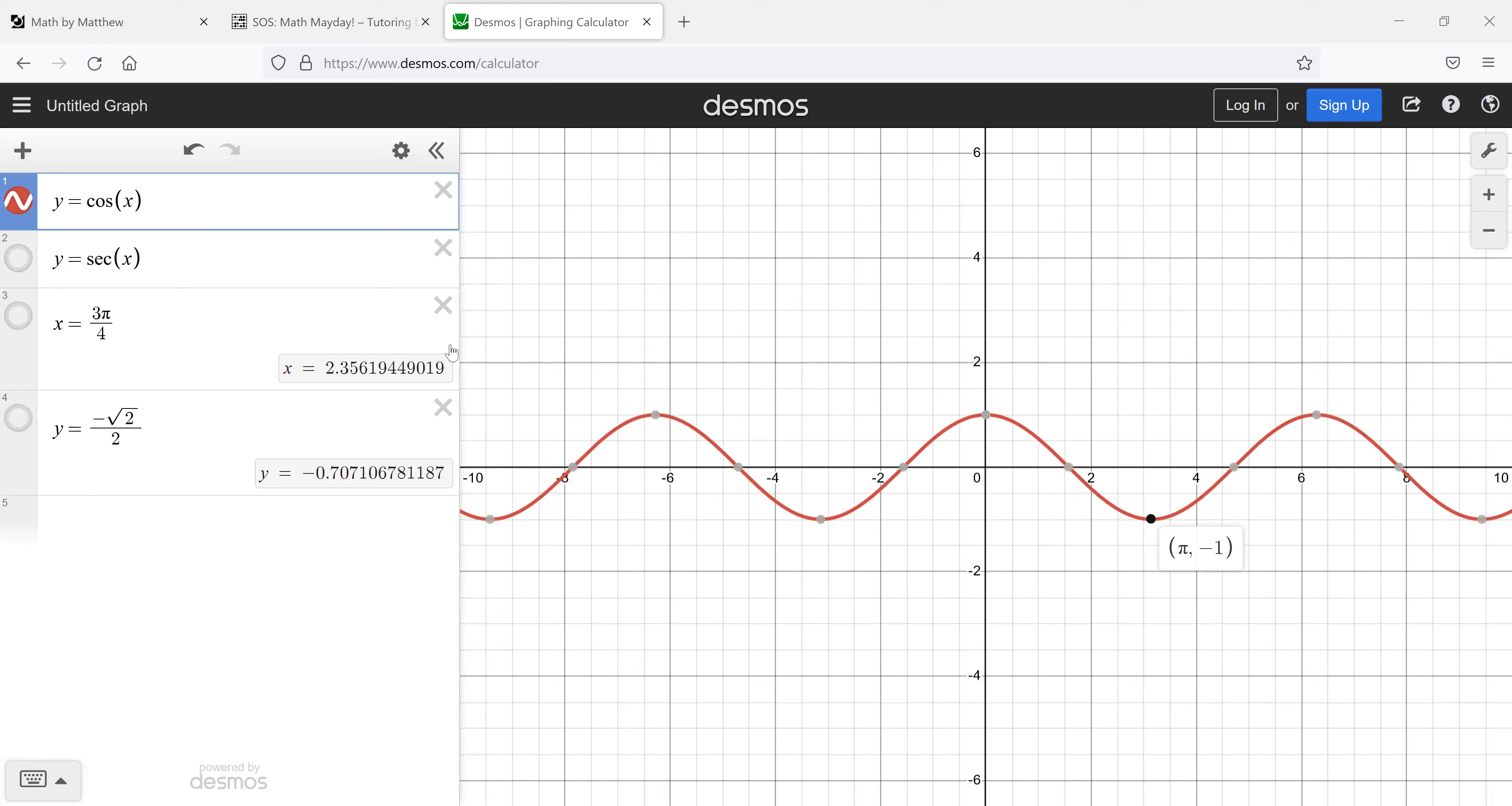So now we're going to do five π over four. What is the y value there? Negative square root of two over two. Yes. And your instructor expects you to say that or do that. So then if we go to three π over two, that's zero.